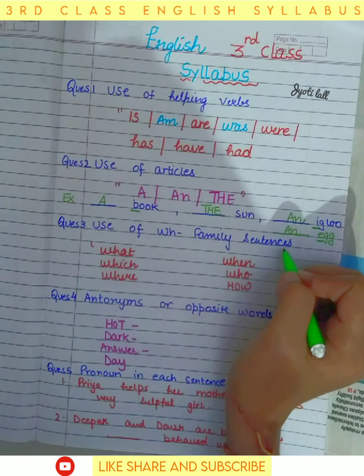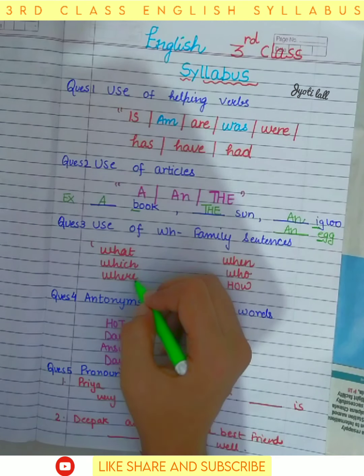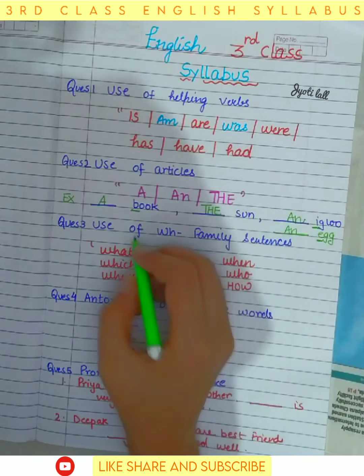The next question is the use of WH-family sentences — this is a very important question. These are question sentences using: what, which, where, when, who, and how. 'What' is for a thing or action — for example, 'What is this?' 'Which' is for place — for example, 'Which place is this?'